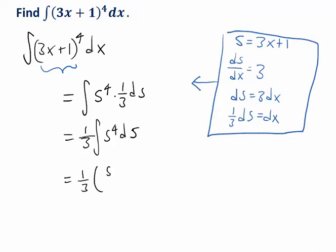Well, that's going to be s to the 5th divided by 5 plus c. Remember, we always have a constant of integration at the end. And then I can combine the coefficients of 1 third and the 5 in the denominator here to make that 1 over 15.